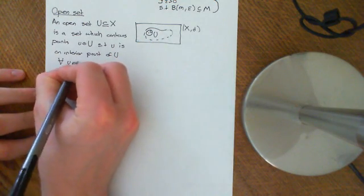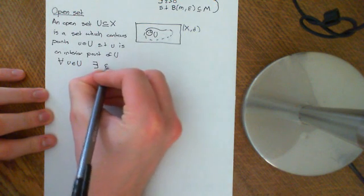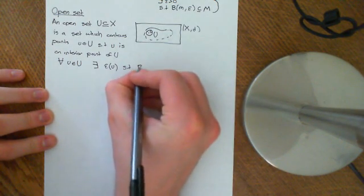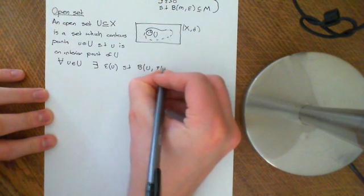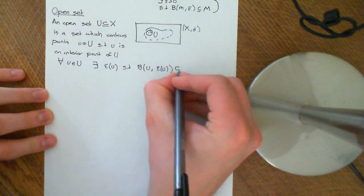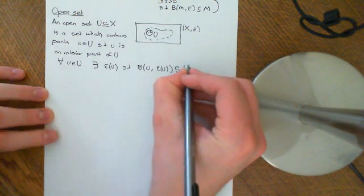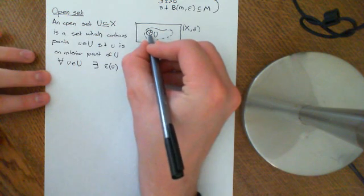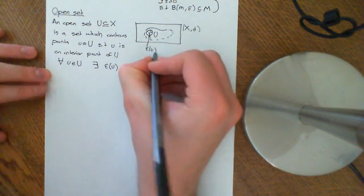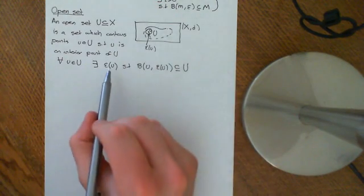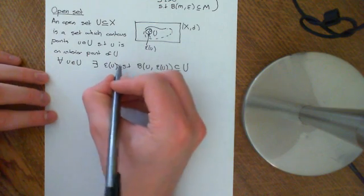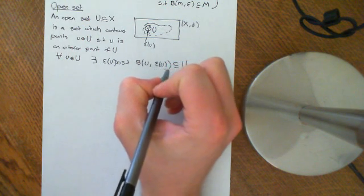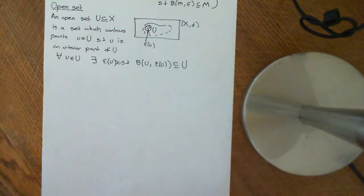So for all little u that is an element of big U, there exists an epsilon which is a function of u, such that the ball centred at u of size epsilon — which will vary depending on what point you're at — is completely contained within the set big U. That is the definition of an open set: for all points, you can find an epsilon greater than zero, so some radius greater than zero, such that when I take the open ball around that point of that radius, it's completely contained within big U.